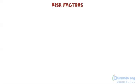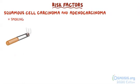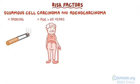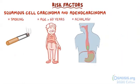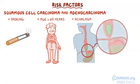Risk factors for both squamous cell carcinoma and adenocarcinoma include smoking, age over 60 years, and achalasia, which is when the smooth muscle of the lower portion of the esophagus doesn't work well, making it difficult for food to pass toward the stomach.